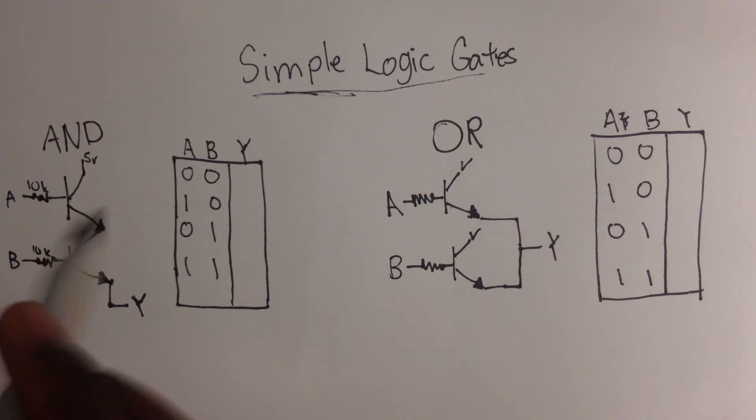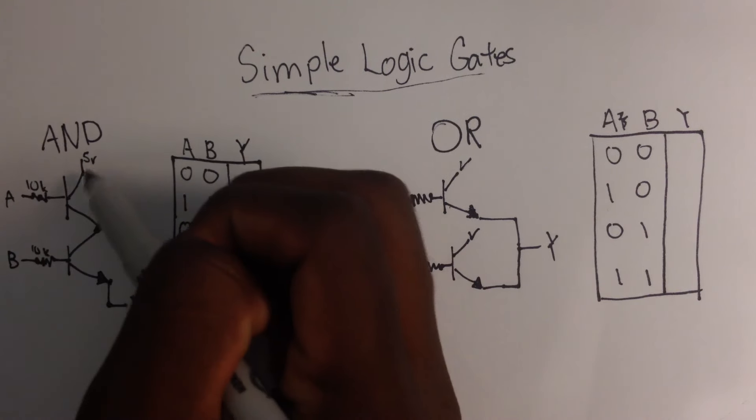Okay, how do we make some simple logic gates? And the first one we're going to do is AND gate.